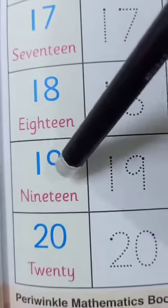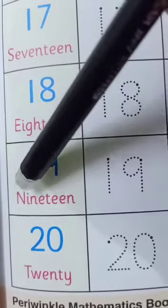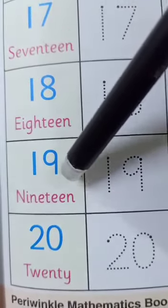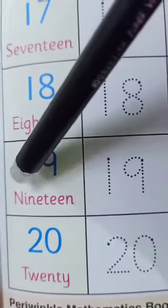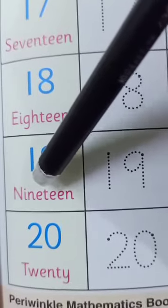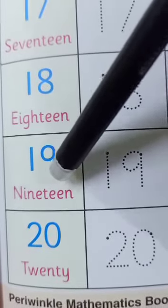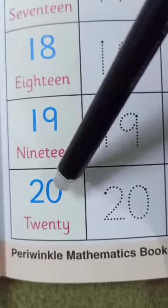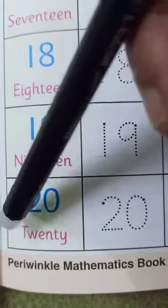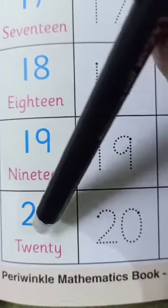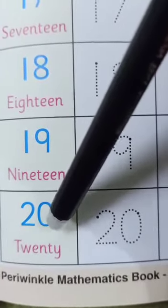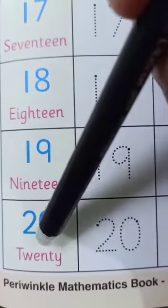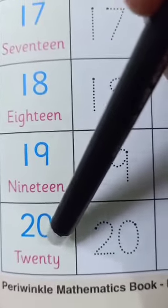Next number is 19, N-I-N-E-T-E-E-N, 19. Last number is 20, T-W-E-N-T-Y, 20.